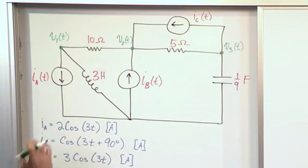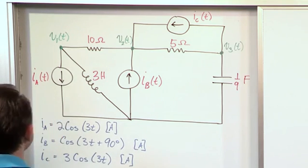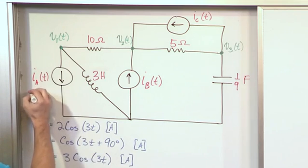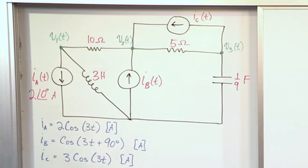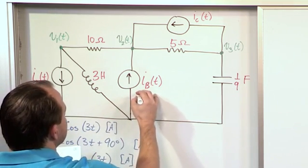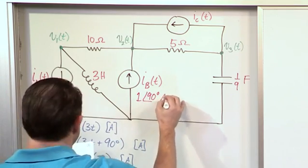So the first thing you can do before you do anything else is you can write the phasor representation of these sources. So in this case, for Ia, it'll be two at an angle of zero degrees amps. For Ib, it'll be one at an angle of 90 degrees. So it'll be one at an angle of 90 degrees amps.